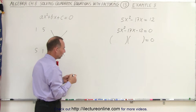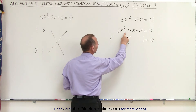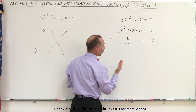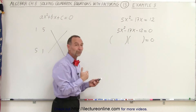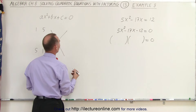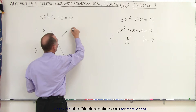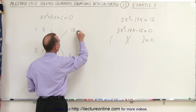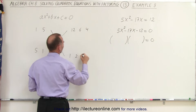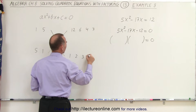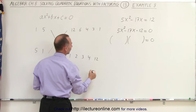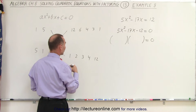Now notice the signs. We see a negative on the middle term and a negative on the third term. That means that one of the numbers must be negative and the other one must be positive. And how do we get 12? We can get 12 by having 12 and 1, 6 and 2, 4 and 3, 3 and 4, and 1 and 12 — and one must be positive and one must be negative.